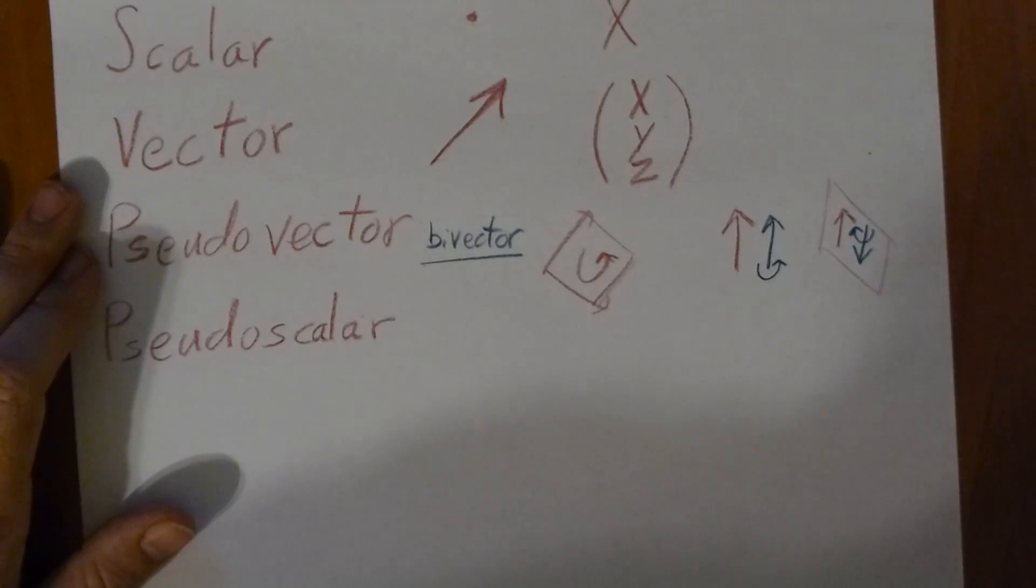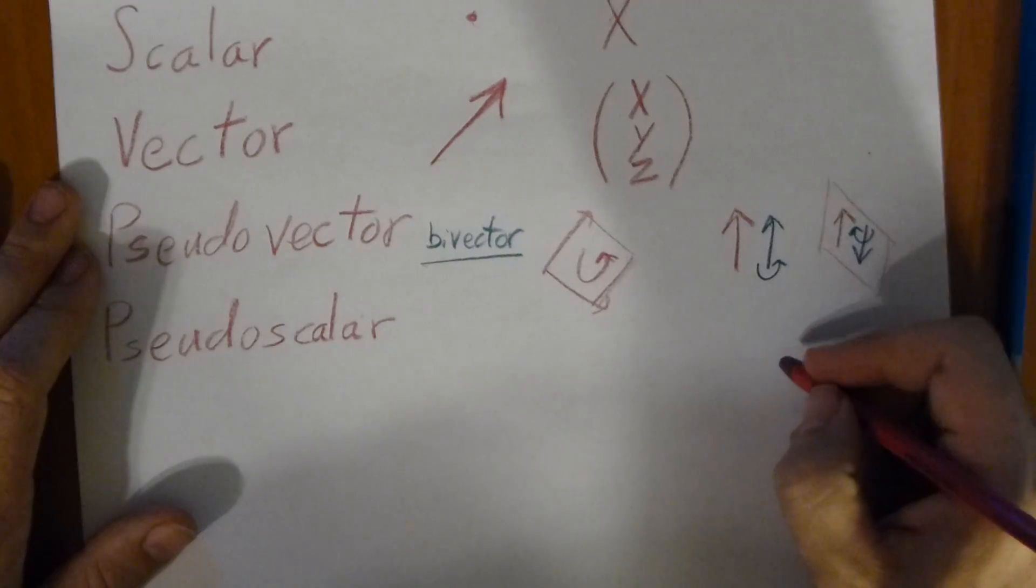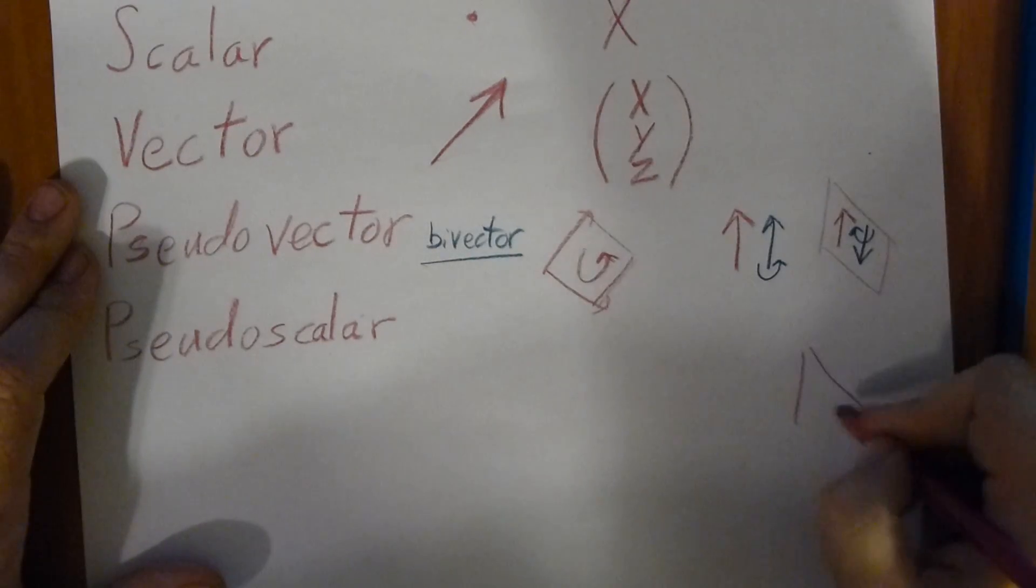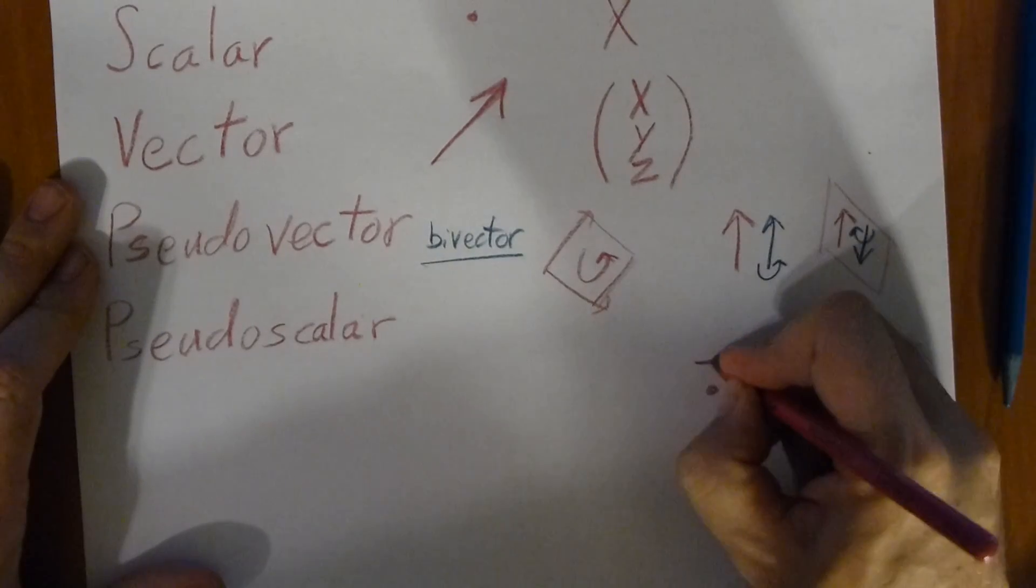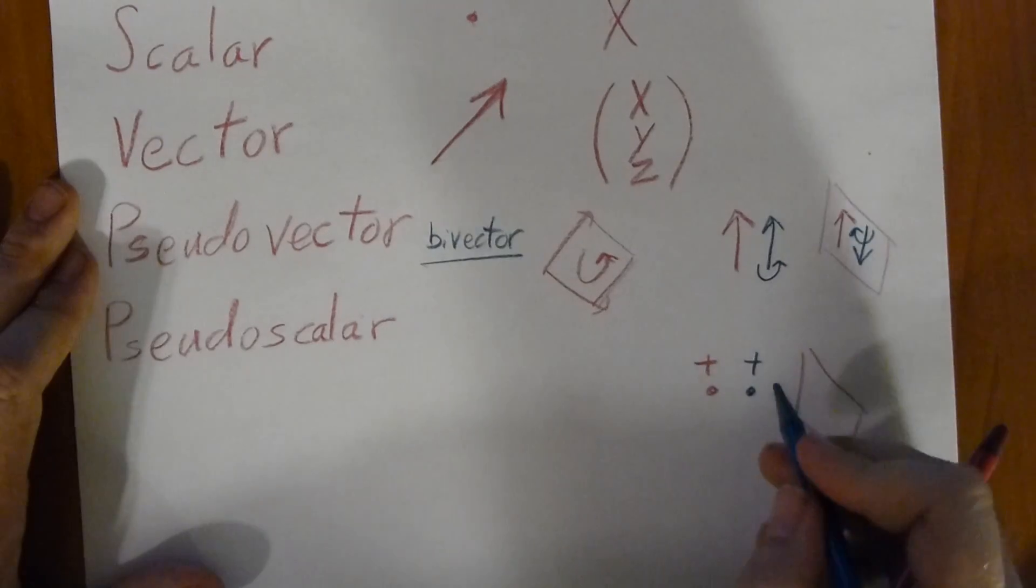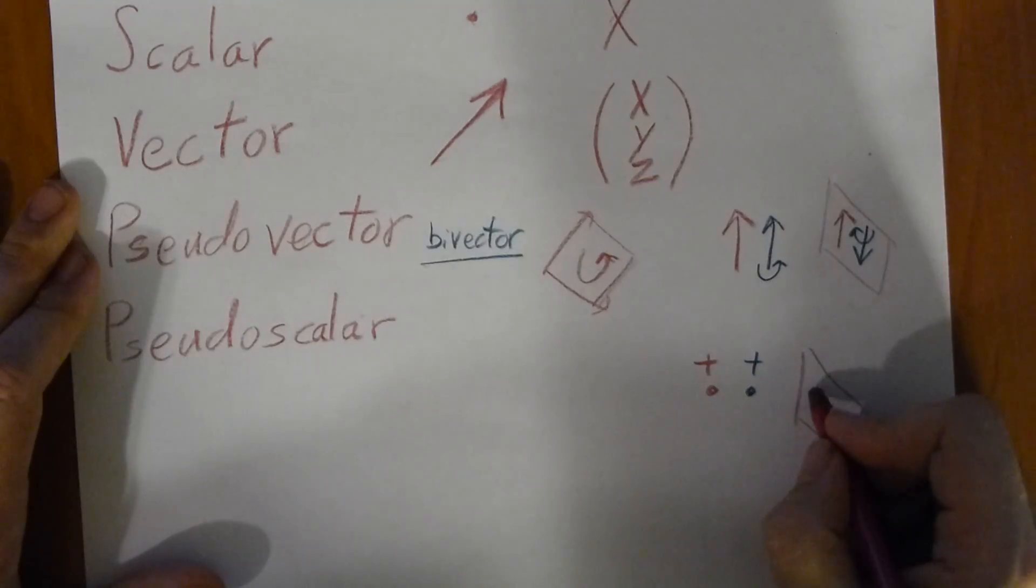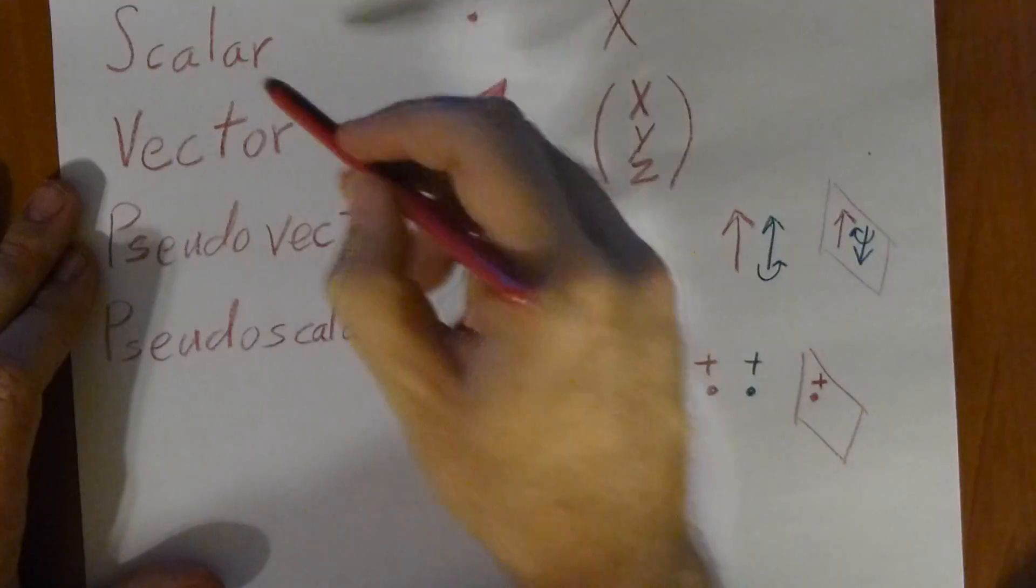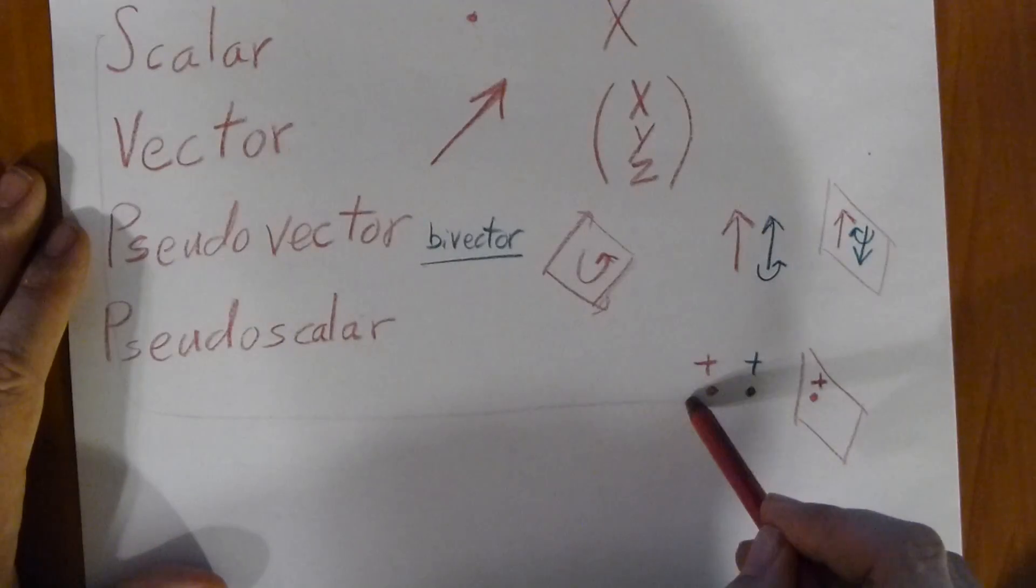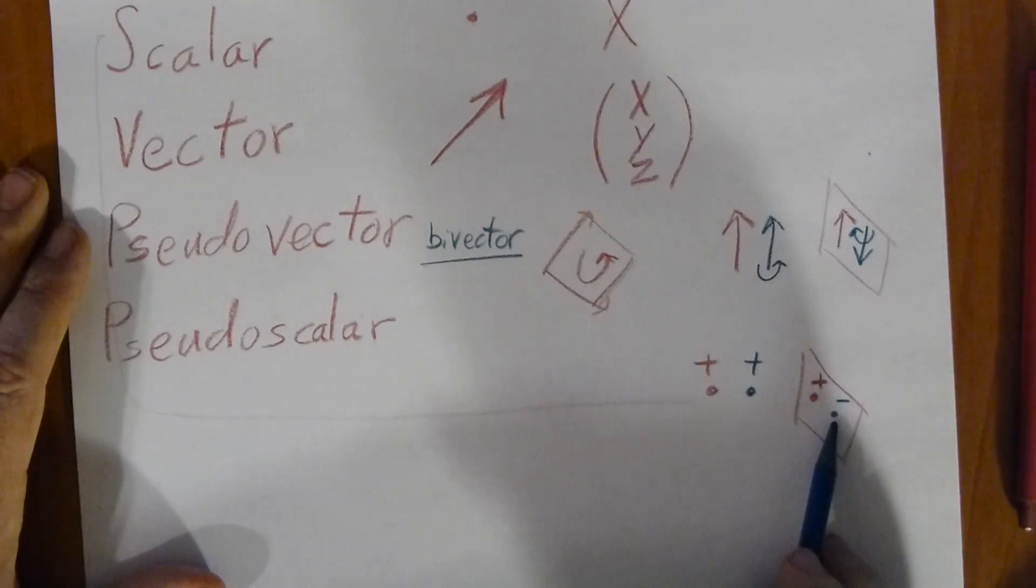Pseudoscalars act similarly to this also. You put them in a mirror—here we'll have a positive magnitude and a positive pseudovector. You put it in the mirror, it's a positive scalar. But you have a negative pseudoscalar.